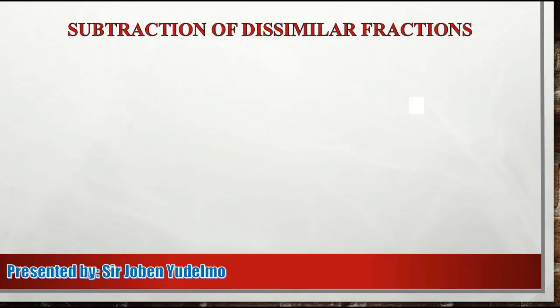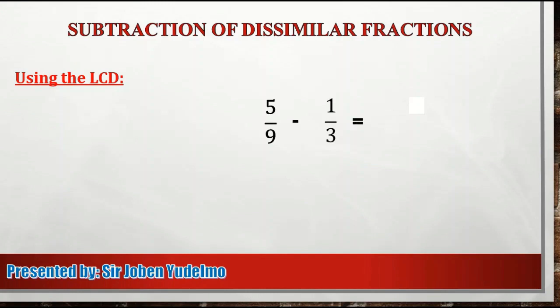Paano naman mag-subtract ng mga dissimilar fractions? So kagaya ng addition of dissimilar fractions, pwede rin natin gamitin ang LCD at saka ang butterfly method. So una, by using the LCD. For example, our given is 5 ninths minus 1 third. So to subtract the dissimilar fractions, we need to find first their LCD. Again, ang LCD ay siya ring LCM ng ating mga denominators. So sa ating given, ang denominators ay 9 at saka 3, at ang kanilang LCM or LCD ay 9.